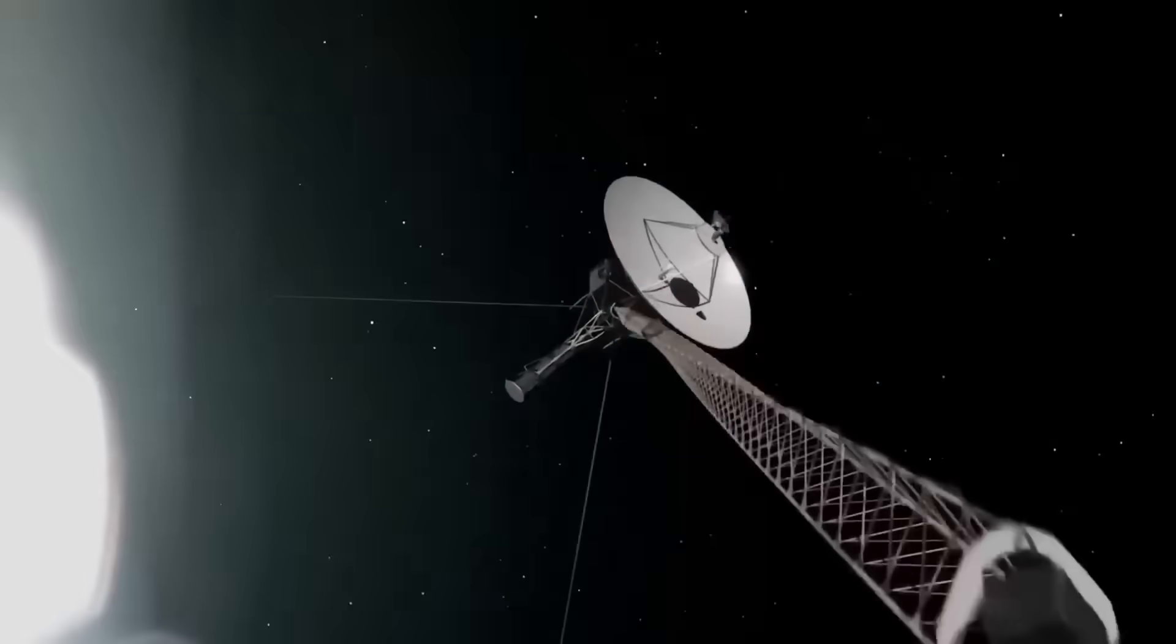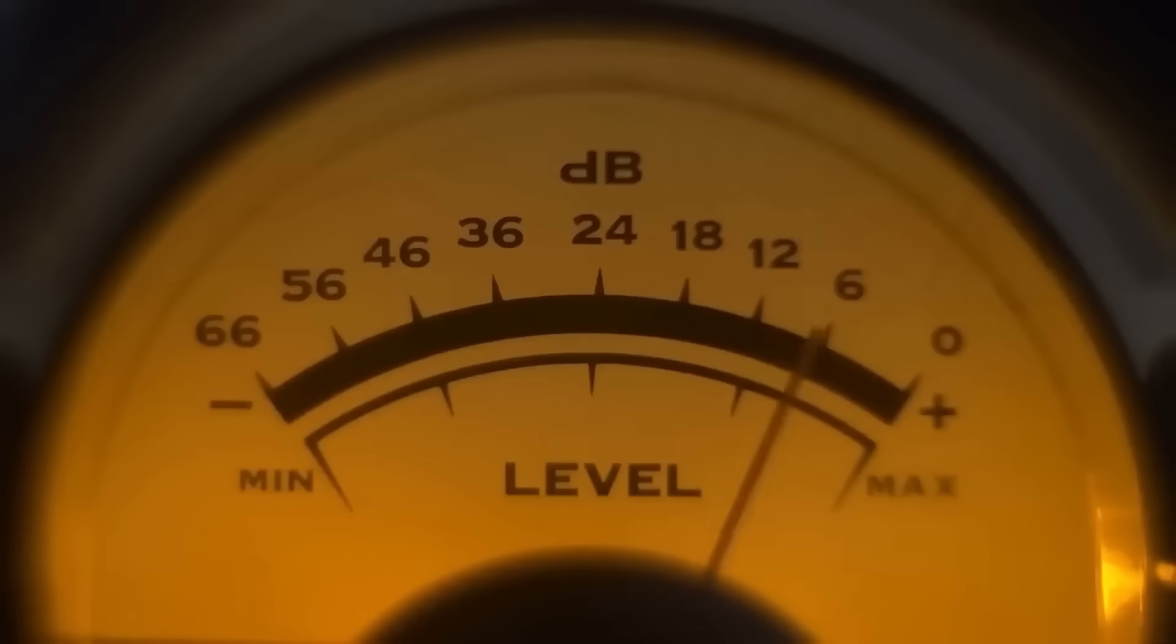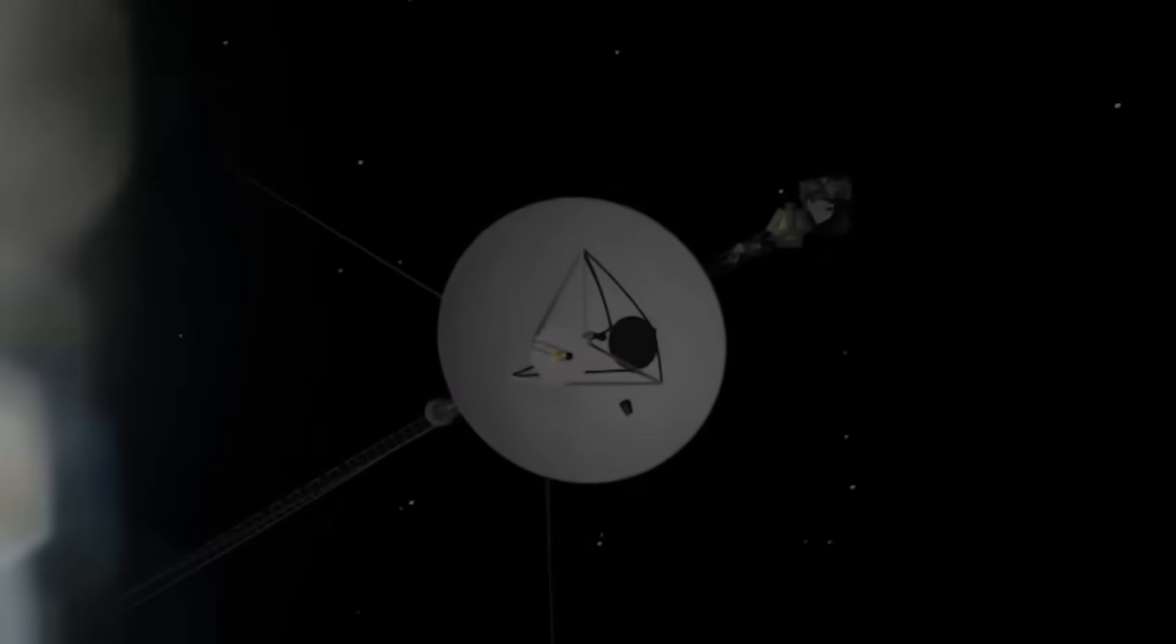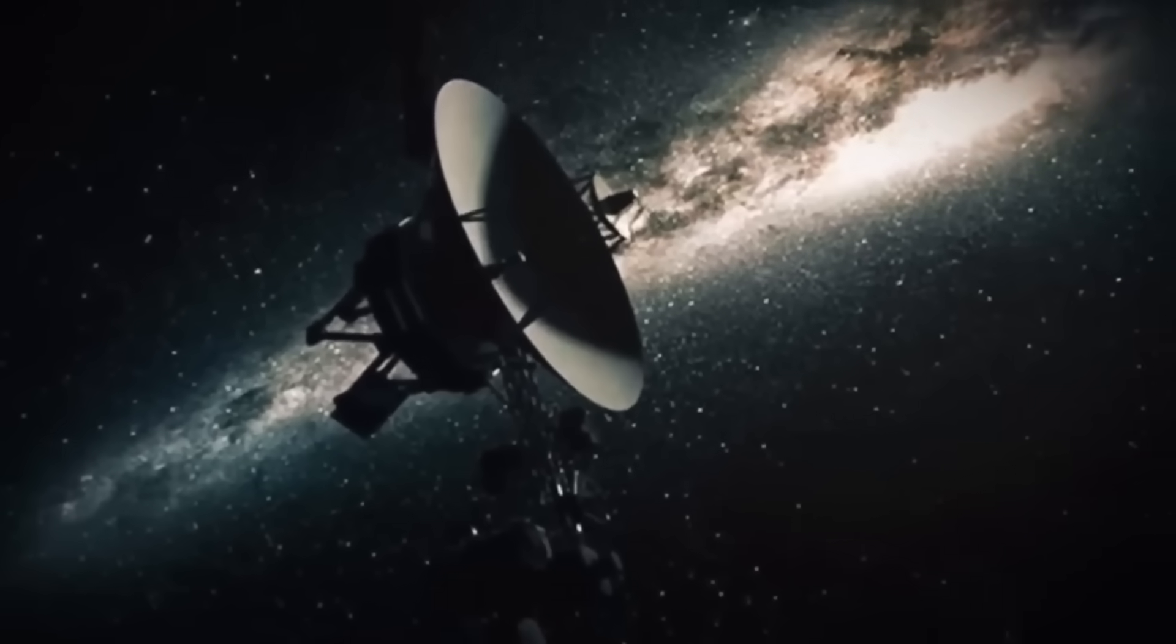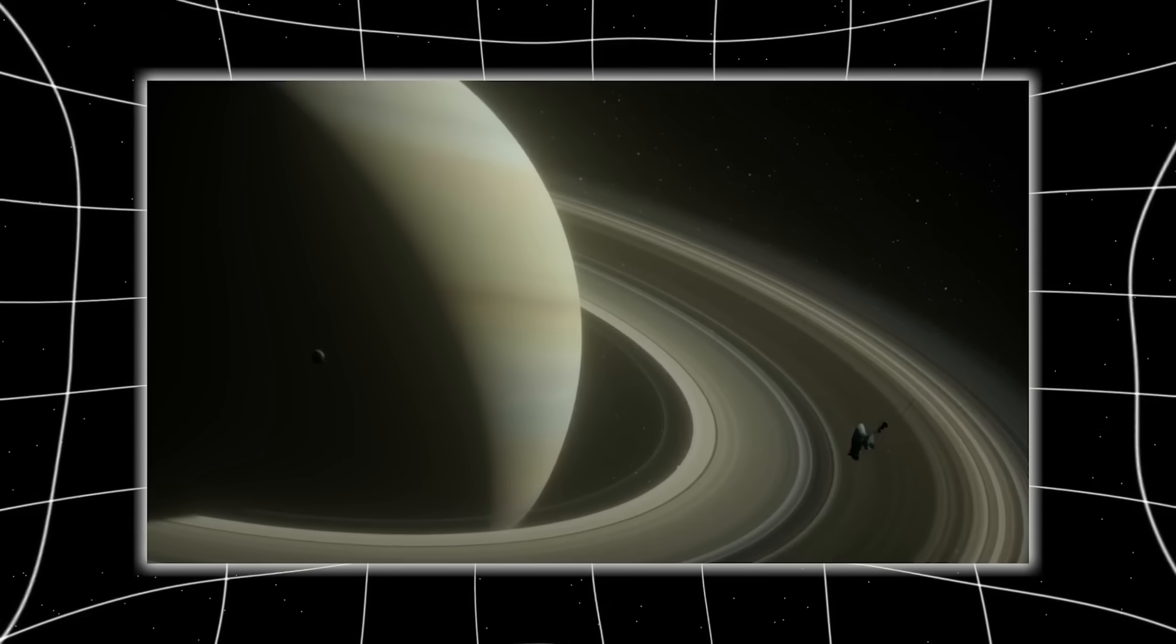And then came silence. For 12 full hours, Voyager 1 disappeared. No signal, no telemetry, no heartbeat. NASA didn't panic at first. After all, space is unpredictable. But Voyager had never gone dark. Not in 46 years. Not for even an hour. And when the signal returned, it wasn't the same.